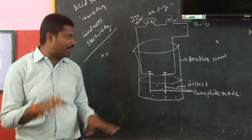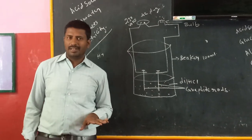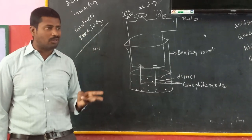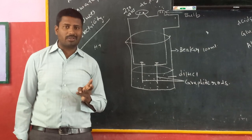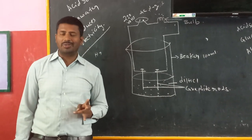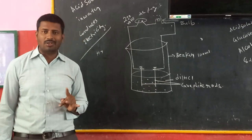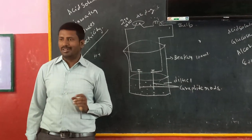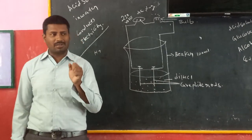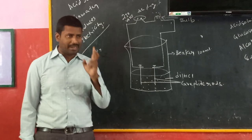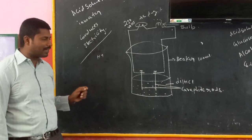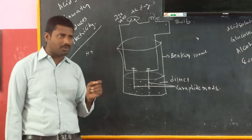On the day of experiment, take a 100 ml beaker and prepare three solutions: one is an acidic solution — hydrochloric acid solution — another is glucose solution, and another is alcoholic solution. Take the 100 ml beaker and add the acidic hydrochloric acid solution. Then take two graphite rods of equal size and connect these two graphite rods using connecting wires.